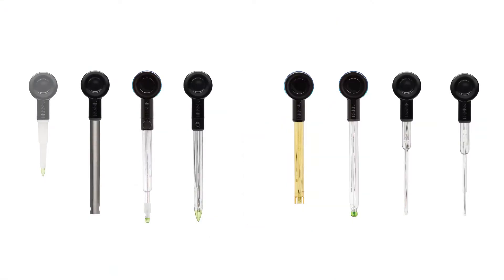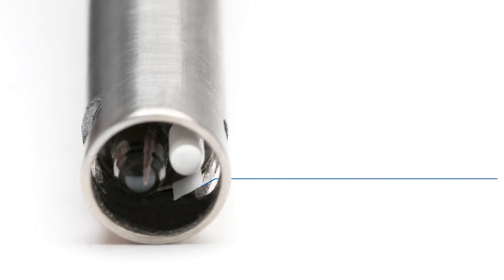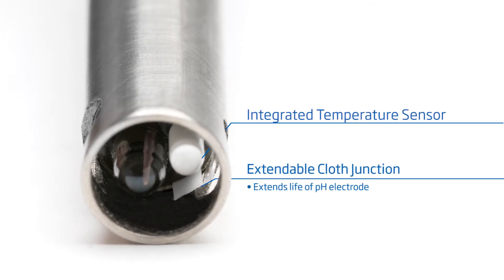Let's take a look at the FC2142 Halo designed for measuring the pH of beer. This electrode is designed with a titanium body and a spherical high temperature glass sensing bulb. It also features an extendable cloth type junction along with a built-in temperature sensor and amplifier in a single probe design.